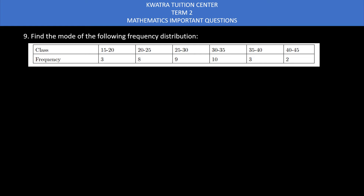Starting with the 9th question, it says find the mode of the following distribution. You have class given and frequency given, and here you have to find the mode.